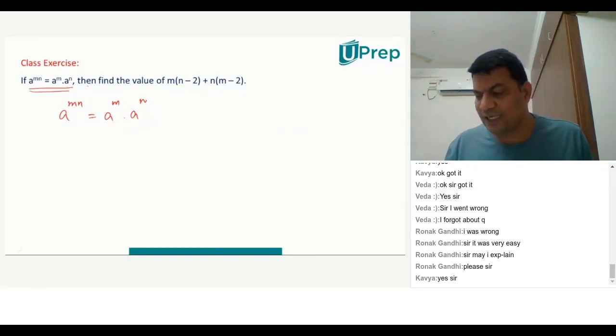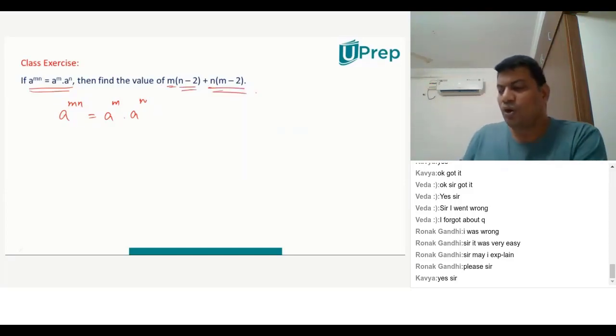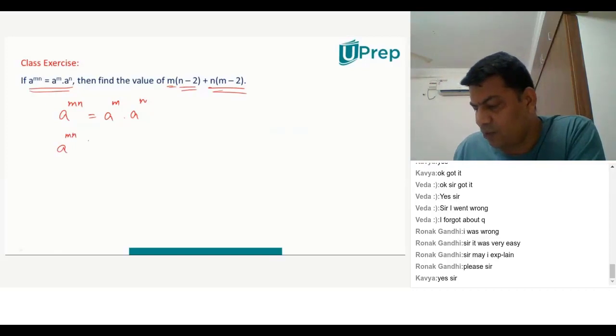So if this is true, he's asking you to find the value of m into n minus 2 plus n into m minus 2. So suddenly you'll get confused. Where is this 2 coming from? You should never jump the gun. Instead, first observe what is given to you. You can simplify this further and say a power mn is equal to a power m into a power n is a power m plus n.